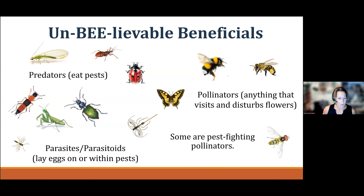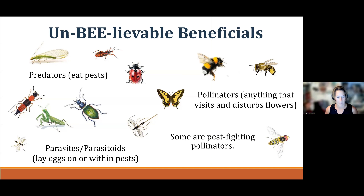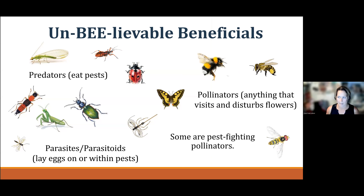As a quick reminder, beneficial insects provide valuable services such as pest management or pollination, and generally they're broken down into three categories. There are predators that attack and eat their prey. There are parasites and parasitoids that lay eggs either on or within a host. And then there are pollinators, which are pretty much anything that visits and disturbs a flower. Some of these actually serve multiple functions and act as pest-fighting pollinators.